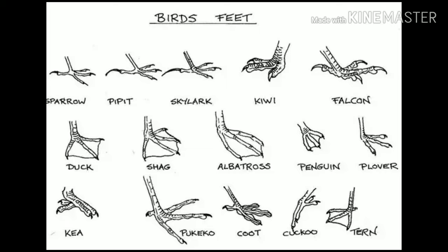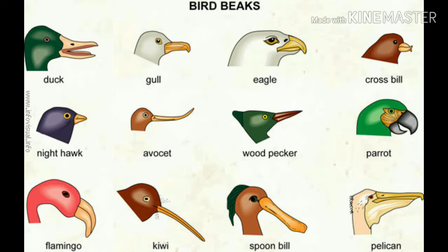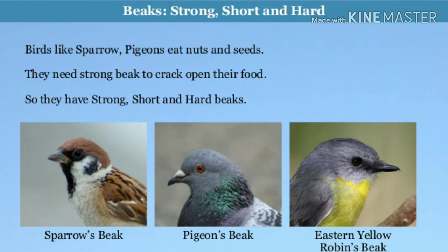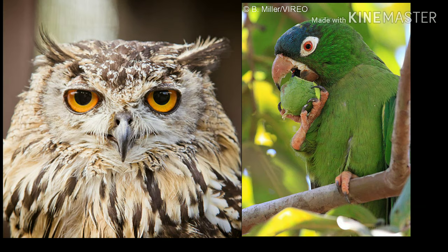Then the teacher should talk about claws and beaks. Birds have different kinds of claws — crows have long and thin claws which help them hold branches firmly. Eagles have strong and sharp claws to catch and hold their prey. Birds also have different kinds of beaks used for eating and carrying materials. Sparrows, pigeons, and peacocks have short and hard beaks for cracking nuts and eating seeds and grains. Eagles and vultures have strong, sharp, and hooked beaks for tearing flesh. Parrots use curved beaks for cracking nuts and seeds. Owls use their hard, sharp, and curved beaks to tear the flesh of their prey.